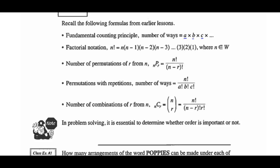Factorial Notation tells us that N factorial can be written as N times (N minus 1) times (N minus 2) times (N minus 3) all the way down to 3 times 2 times 1. Remember, N must always be a whole number.